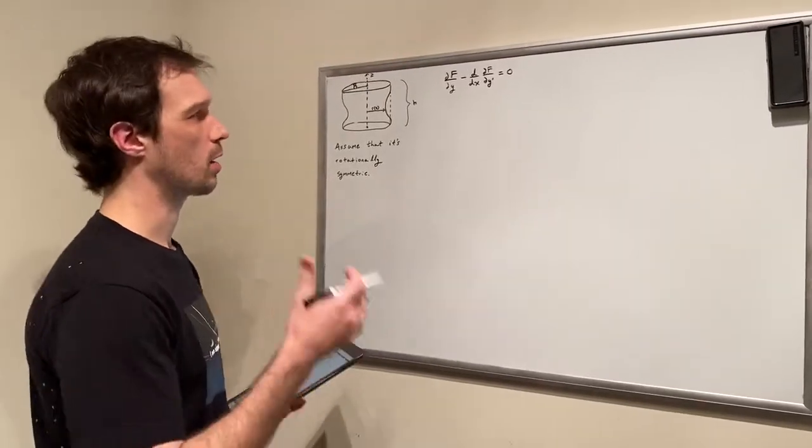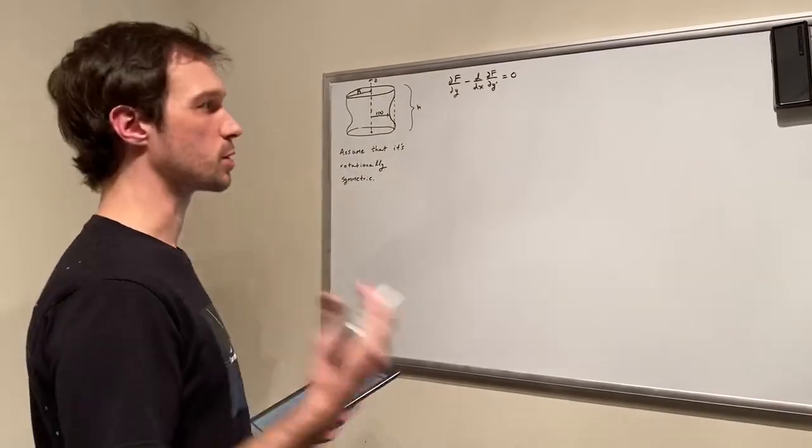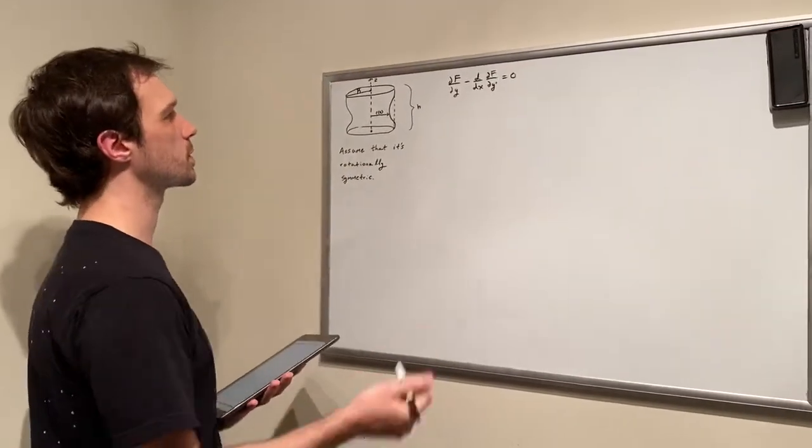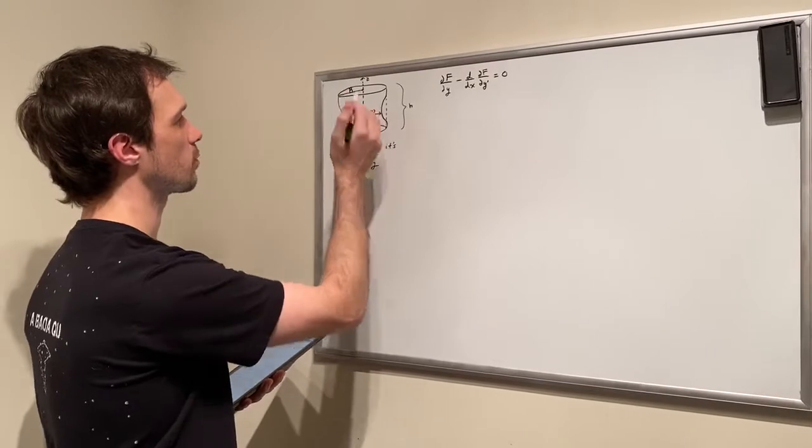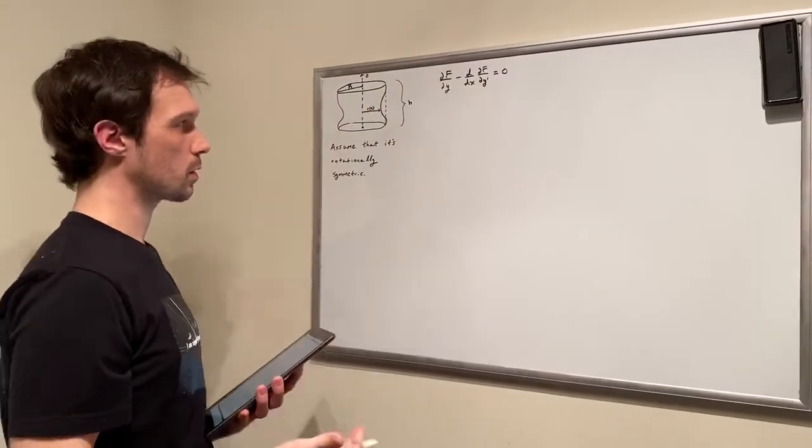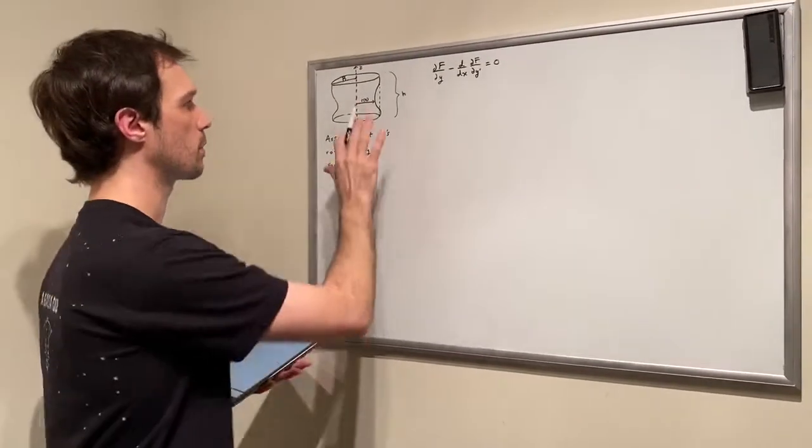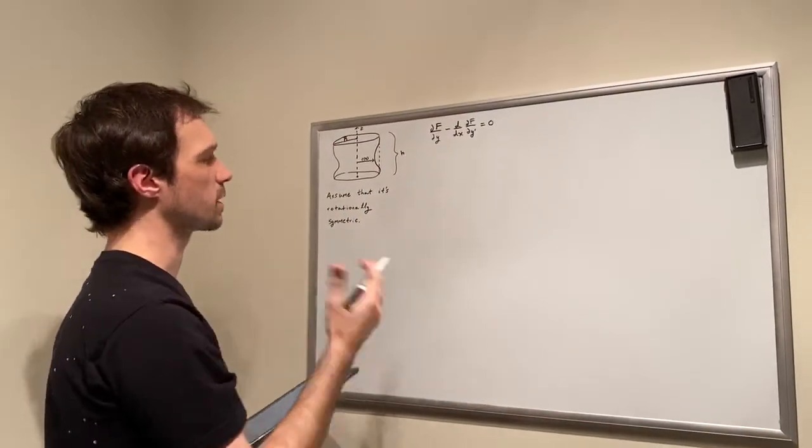Okay, for this problem we are asked to find the minimal surface of a soap film around two hoops. So our two hoops are going to be like this at some radius r pointing up along the z direction. So we need to find the minimal surface between these two points but around these two of some soap film.